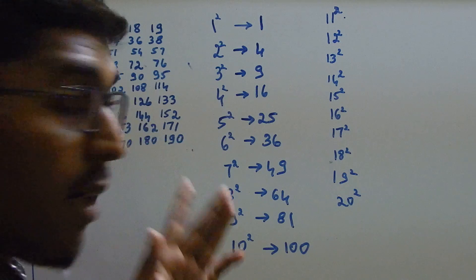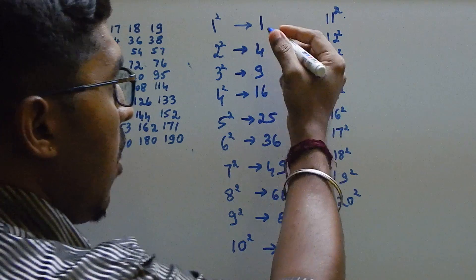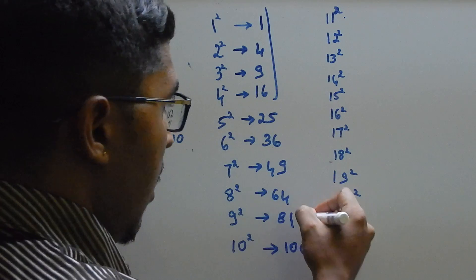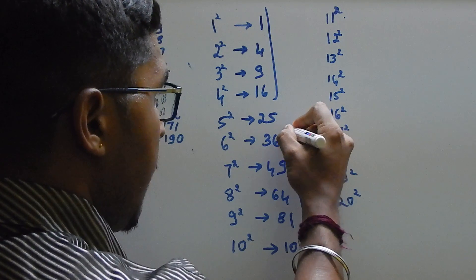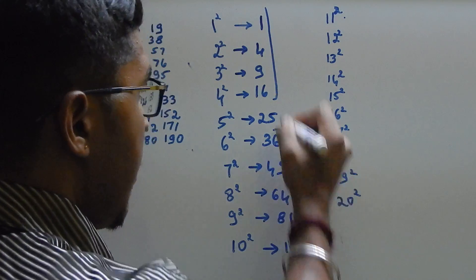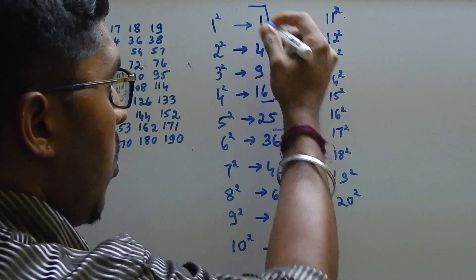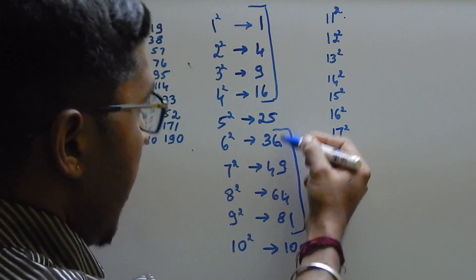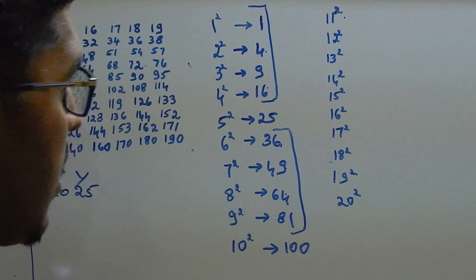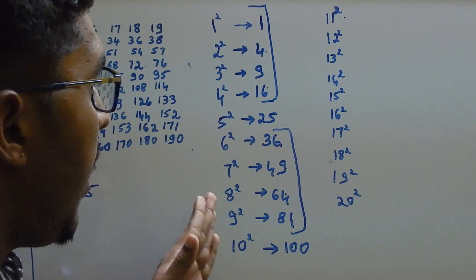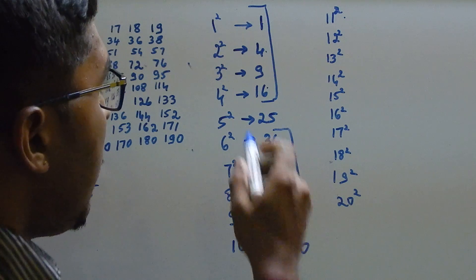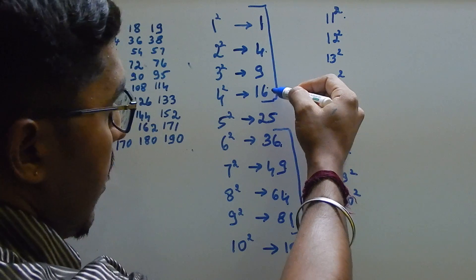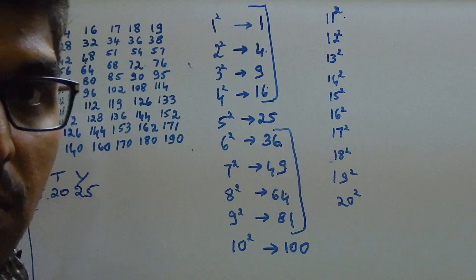the trick is that you can observe here from 1, 4, 9, 6 and 1, 4, 9, 6 it is similar from top to bottom and from bottom to top. 1, 4, 9, 6, 1, 4, 9, 6. This you should be knowing, and whenever the number ends with 1, 4, 9, 6 it is a perfect square.